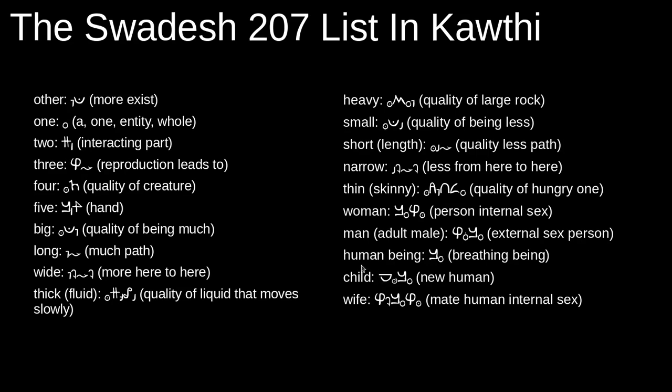The word for human being is HEI, which simply means breathing one. And child is WIHE, which means new human.